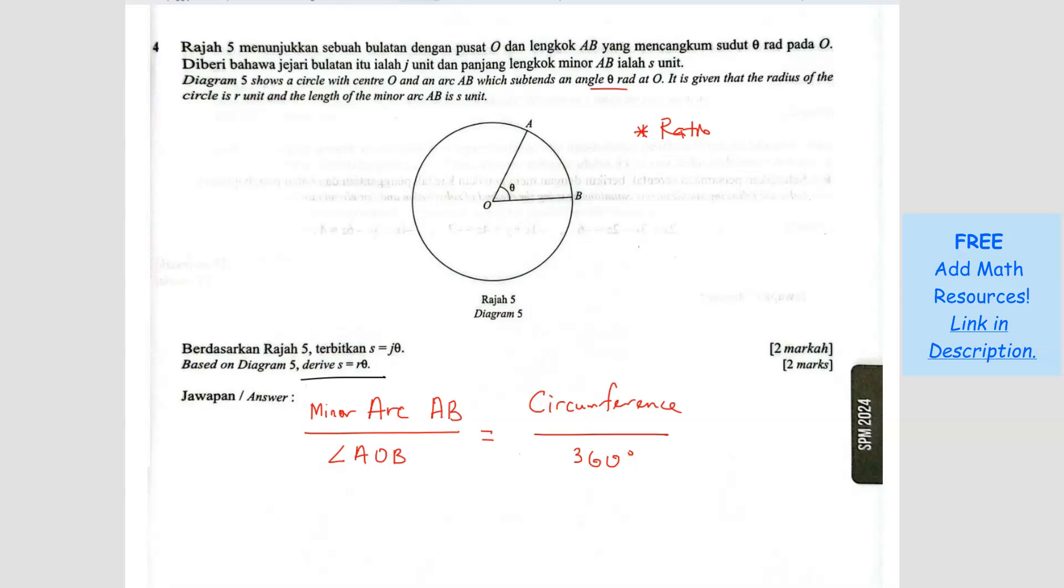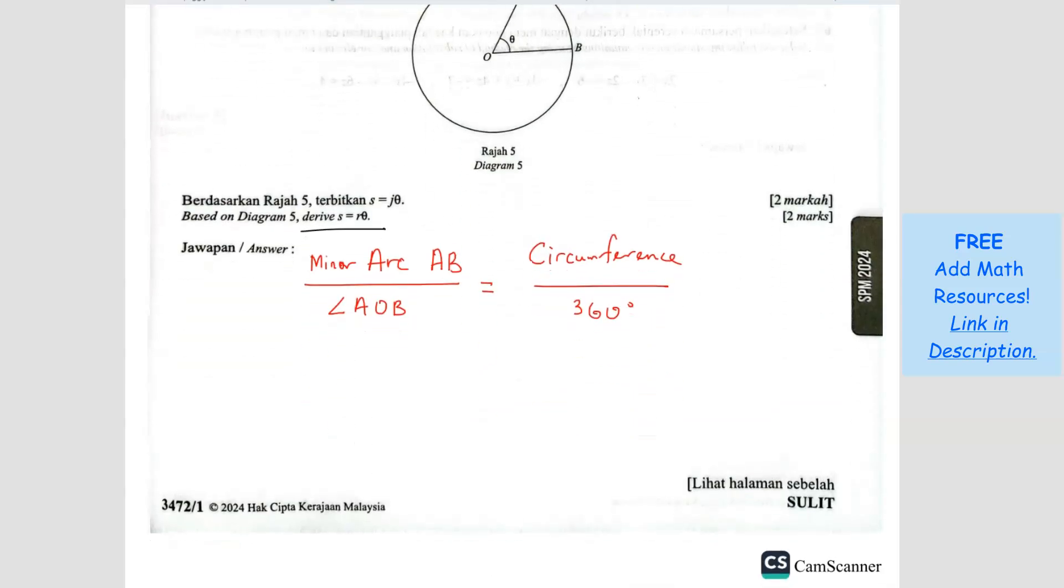then it becomes very easy. We can simplify. We can derive. So in this case, let us do together. So minor arc AB, which we will represent as S. So S over AOB is theta equals to the circumference is 2 pi R and 360 in radian form will be 2 pi.